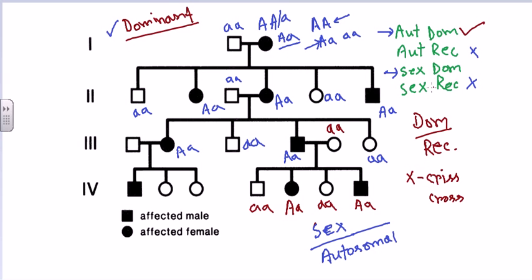We got lucky starting with autosomal dominant, as it immediately explained the pedigree. If it had not worked, we would have moved on to sex-linked dominant. Continuing through the remaining individuals — uninfected parents ('aa') produce only 'aa' offspring, all uninfected — which is consistent. So this pedigree clearly follows an autosomal dominant trait.